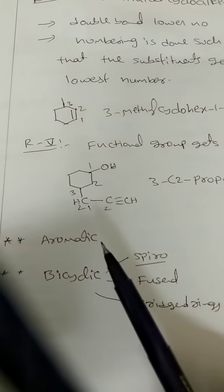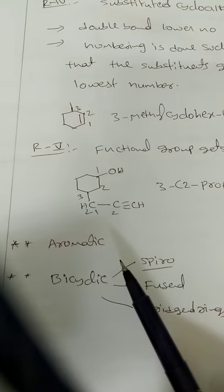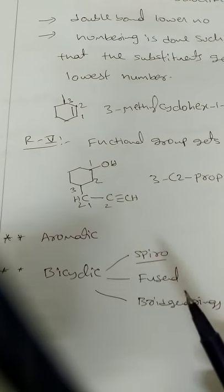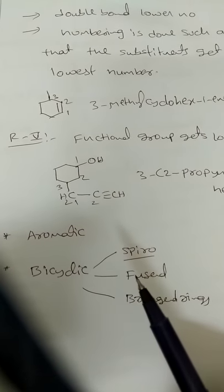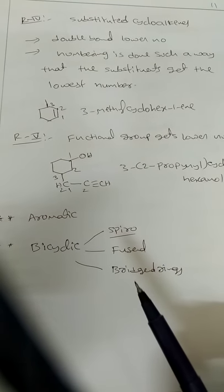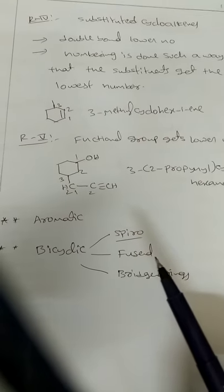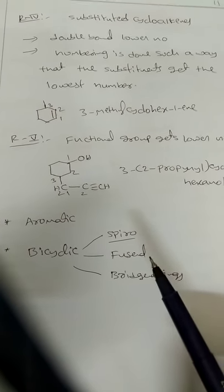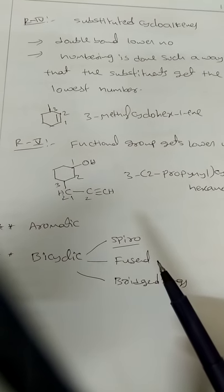The next topics will be aromatic compounds and bicyclic compounds, which include three systems: spiro, fused, and bridged rings. Notes have been provided — please go through them. This covers the entire IUPAC nomenclature series. A question paper will be sent; please solve the problems and share any doubts for hints. Thank you.